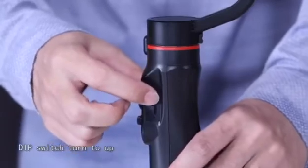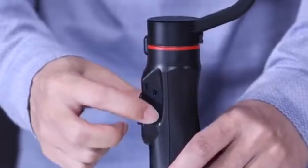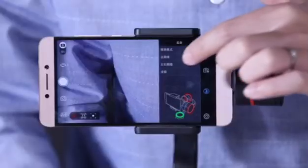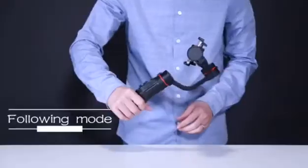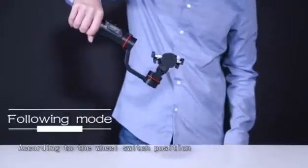The DIP switch. Turn to up. Turn DIP switch up to unlock the motor. According to the DIP switch position, adjust the speed of following.